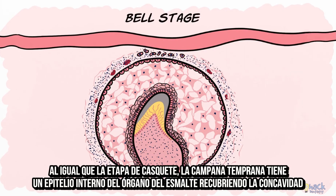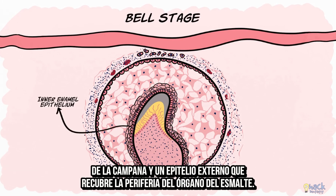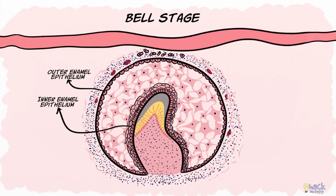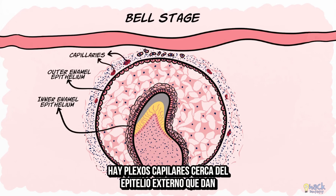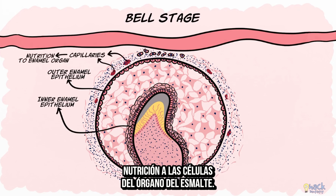Like the cap stage, the early bell stage comprises an inner enamel epithelium lining the concavity of the bell and an outer enamel epithelium lining the periphery of the enamel organ. There are capillary plexuses established near the outer enamel epithelium which bring in nutrition for the cells of the enamel organ.